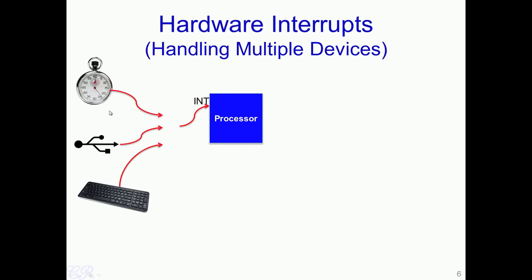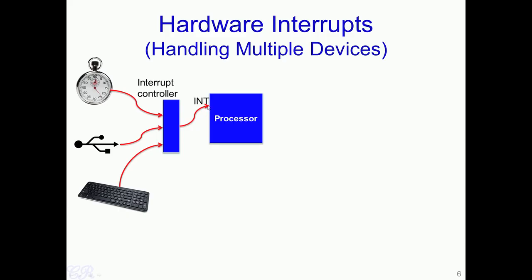Typically systems do not have just one device connected to the processor — there could be several devices such as timers, USB drives, keyboards, mouse, and network cards. However, the processor has only a single interrupt pin. To allow several devices to share the single interrupt pin, a special hardware called the interrupt controller is used. The interrupt controller ensures that the single interrupt pin is shared between multiple devices. It receives interrupts from each of these devices and channelizes that interrupt to the INT pin of the processor.